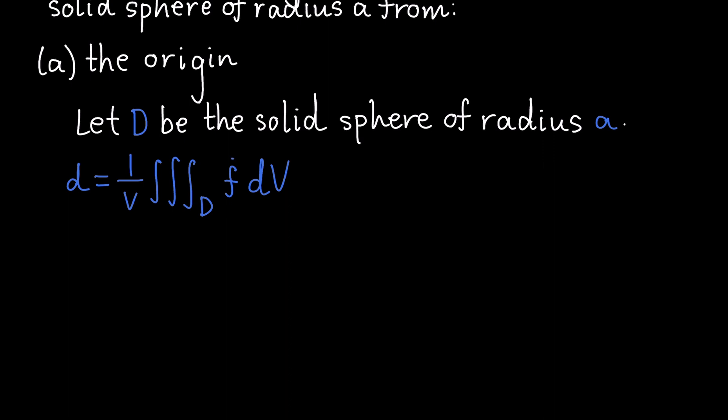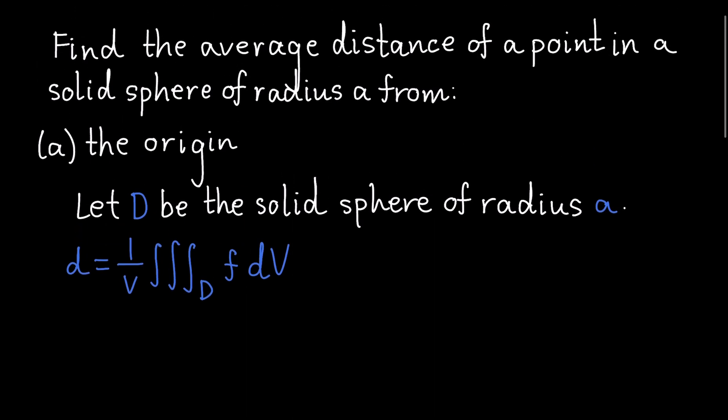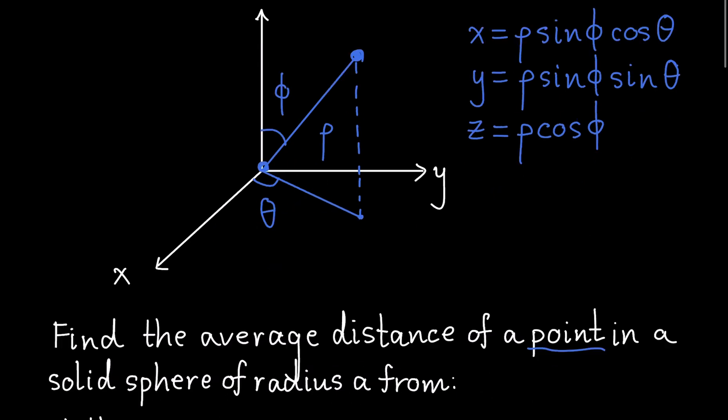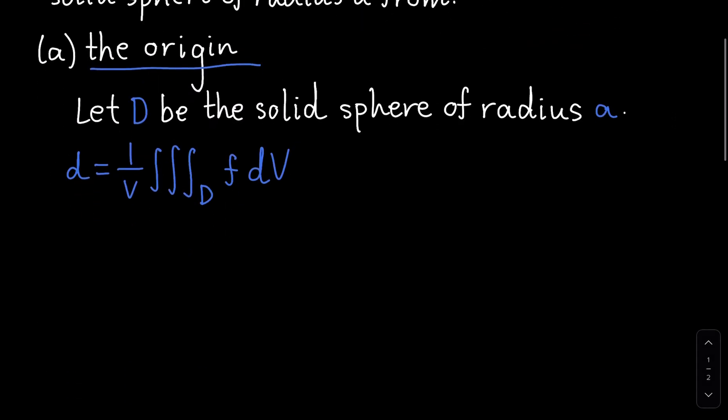So F is the distance from the thing we're trying to consider, from the original location. So note that the origin, the distance of any point to the origin is basically rho, right? Rho is defined to be the distance from the origin to any point. And that's what F really is. F is basically the function distance of a point to where we are considering, which is the origin. So F is equal to rho.